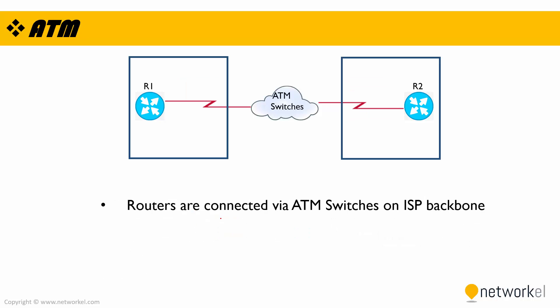Here we have another technology called ATM. In ATM technology, routers are connected via an ATM switch on the ISP backbone. On the ISP side we have ATM switches connected to each other, providing end-to-end communication between different locations. ATM uses asynchronous time division multiplexing and encodes data into small fixed-size packet frames called cells. Cells are 53 bytes in length in ATM.